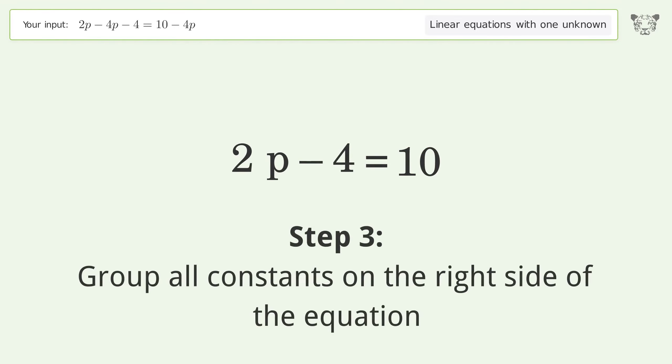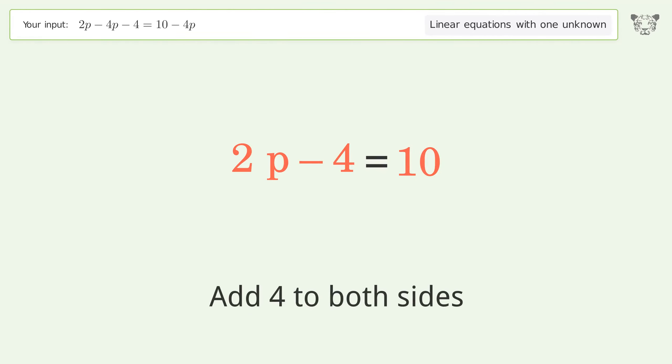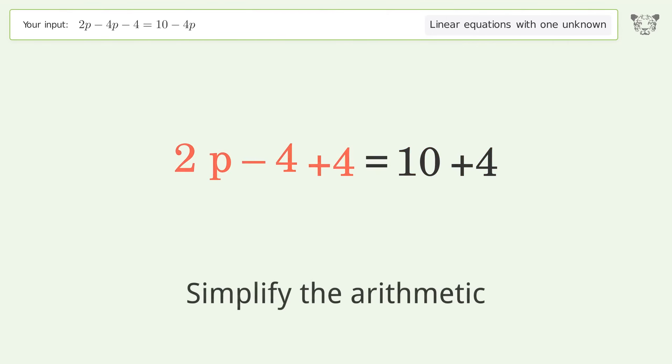Group all constants on the right side of the equation. Add 4 to both sides. Simplify the arithmetic.